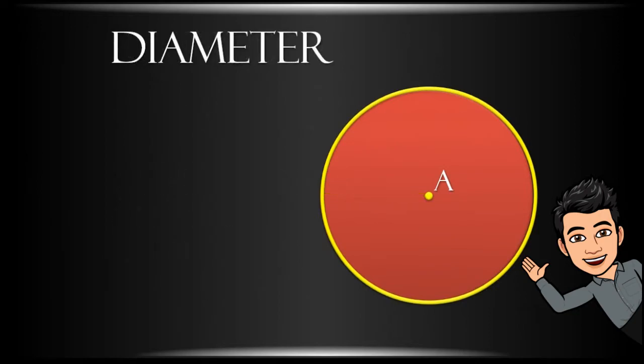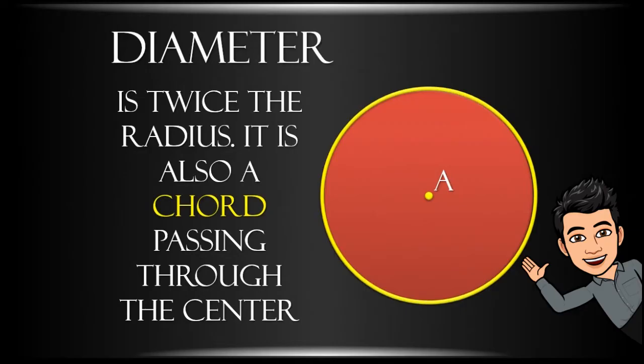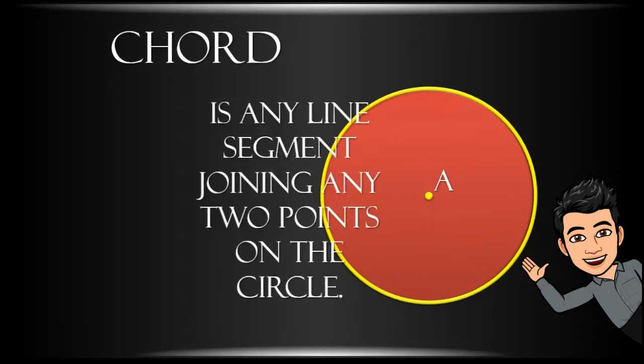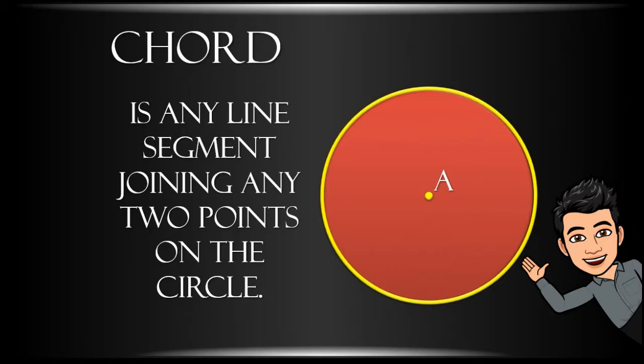The diameter - it is twice the radius. It is also a chord passing through the center. Line segment BC is a diameter of circle A. The chord - it is any line segment joining any two points on the circle. Line segment BD is a chord of circle A.